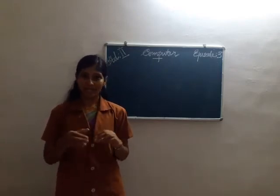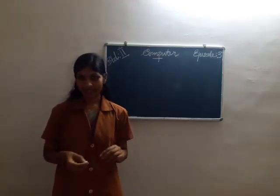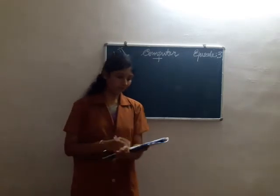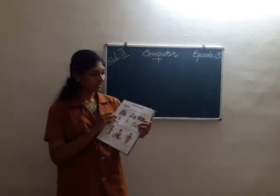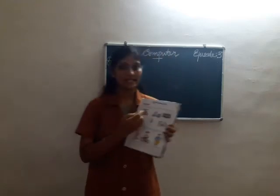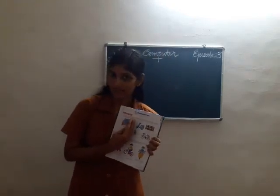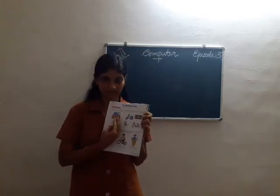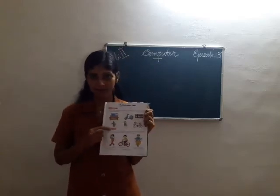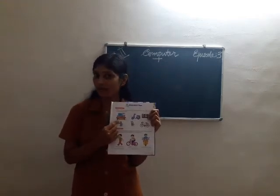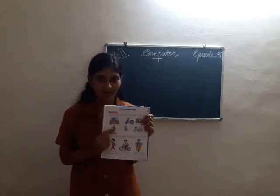Now we are going to do some exercises in this chapter. Let's do it. First is worksheet number one. Here are some pictures — can you see these pictures? There are two classifications: letter A for automatic machine and letter M for manual machine. You have to select which of the machines are automatic and which are manual.